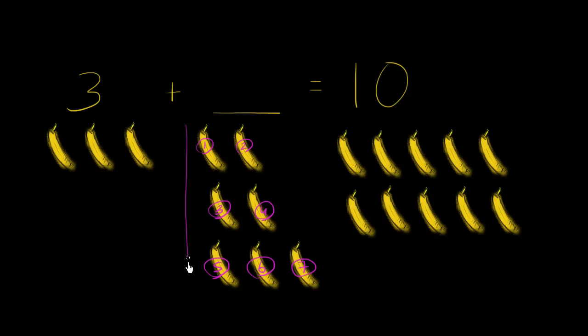I added seven bananas to the original three bananas to get to ten. So three plus seven is equal to ten.